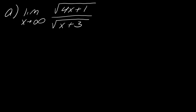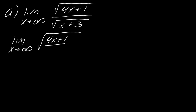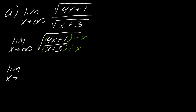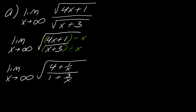Now let's think about this another way. This is a limit as x goes to infinity, and we have really the same root on top and on bottom, so I can rewrite this whole thing. I can instead write this as the limit as x approaches infinity of just the square root of 4x plus 1 over x plus 3. Now I can think back to working with this before we had L'Hopital's Rule - I just want to divide by the highest power of x. Dividing the top and bottom by x gives: the square root of 4x over x is just 4, then 1 over x, over 1, then 3 over x.